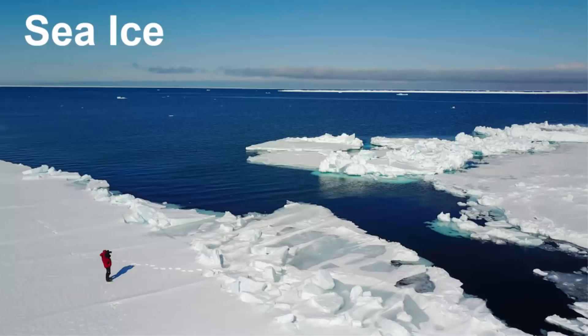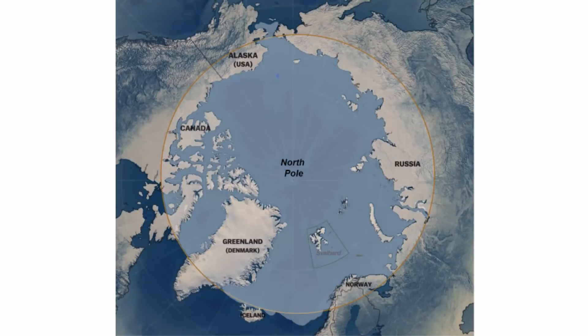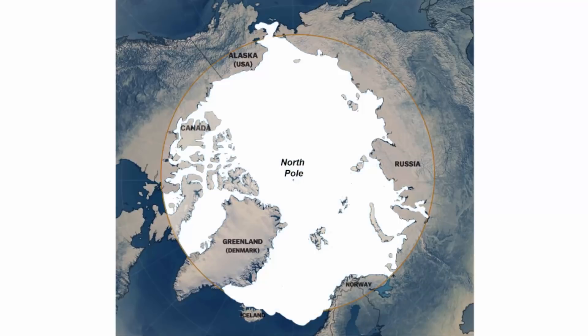The sea ice cover is one of the key components of the polar climate system. Basically, when it gets super cold, the Arctic Ocean water freezes. Then it becomes a giant slab of frozen ocean water.